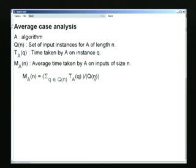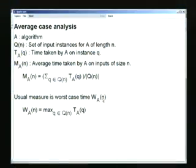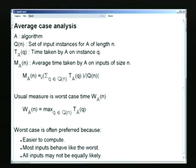This is not the most popular definition. The definition we usually use is the so-called worst case measure. The worst case time of an algorithm A on problems of size n is defined as the maximum over all instances Q — the maximum time taken by any input instance of size n. There are several reasons for doing this. Worst case is usually easier to compute than the average. When we talk about the average, we have to talk about all input instances, whereas often it is easier to deduce what the worst instance is going to be.